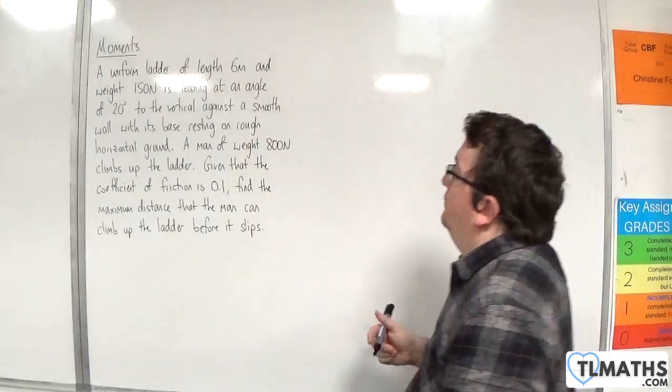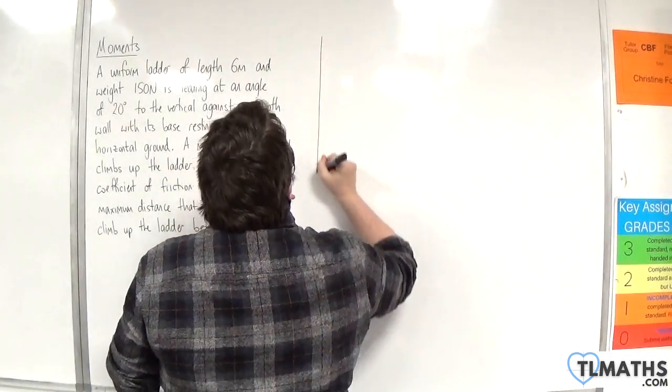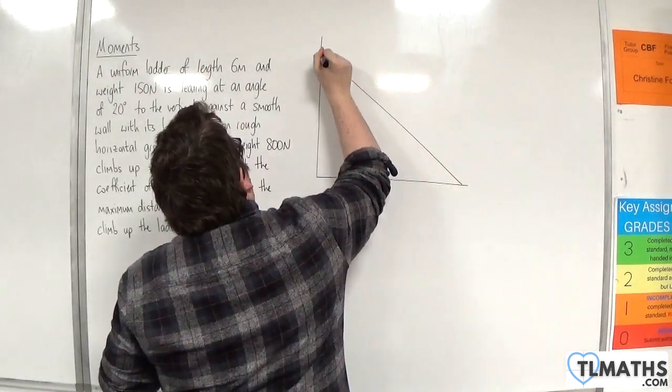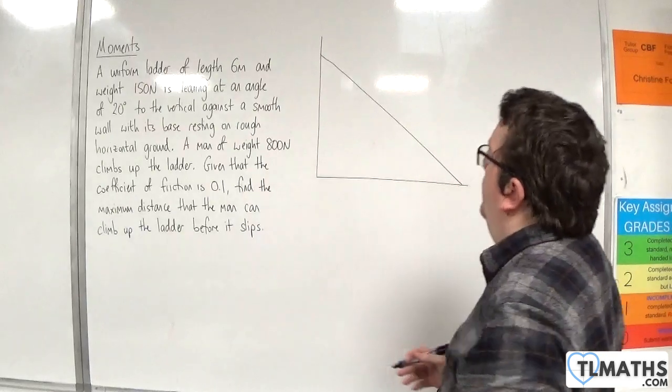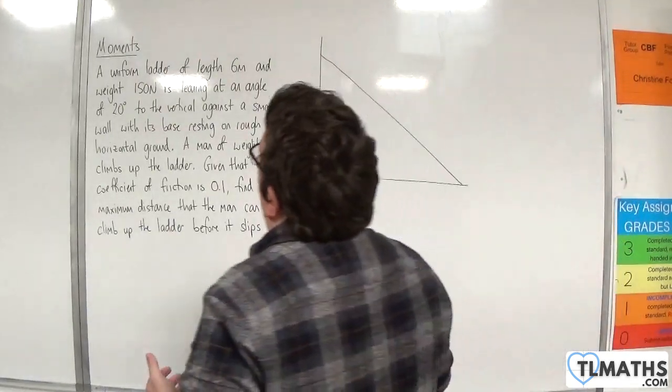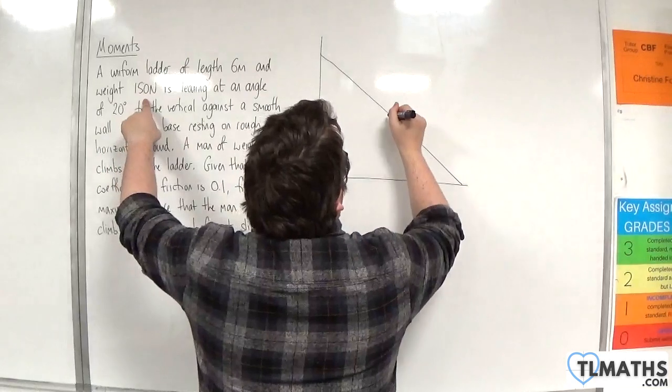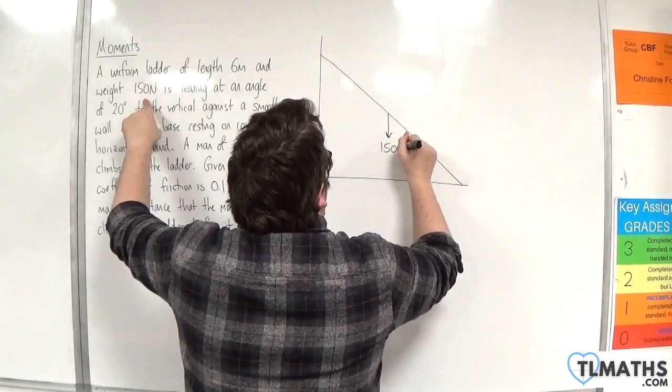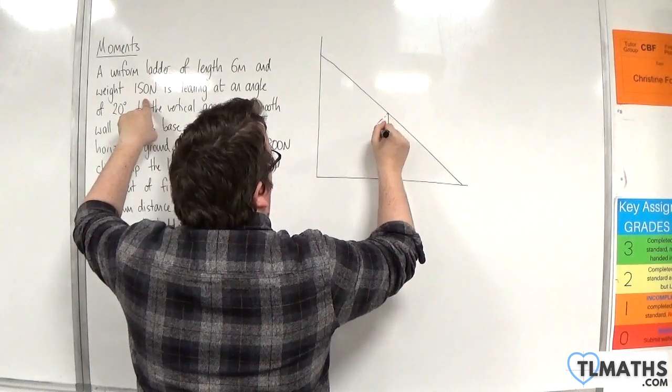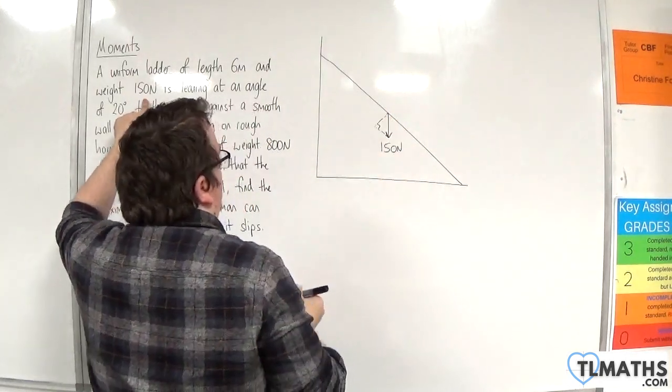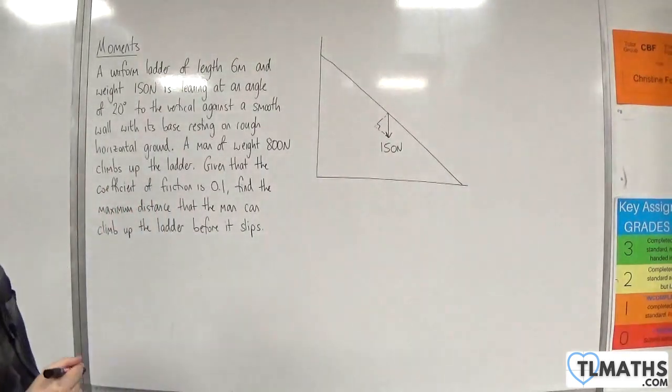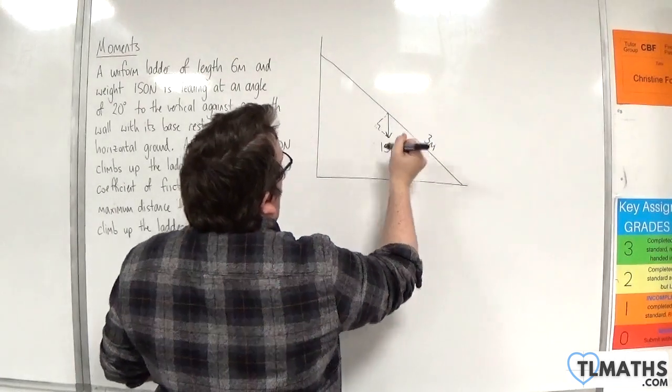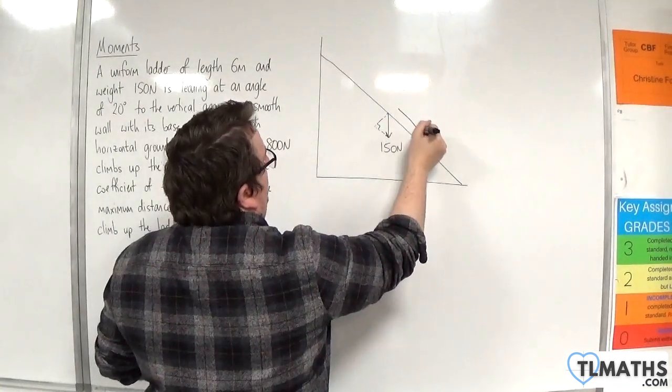Let's dive straight into a diagram. Here's my wall, here's the floor, here's the ladder. We know that the ladder is uniform, it's got a weight of 150 newtons, so I'll start off by putting in 150 newtons there and I'll complete the triangle as well. Now it's 6 meters long, so that means that that distance is 3 meters.